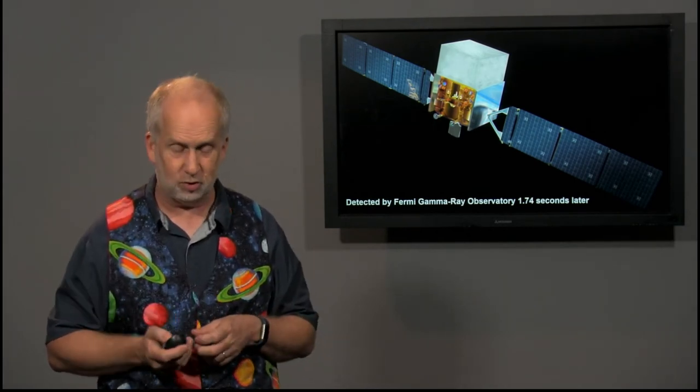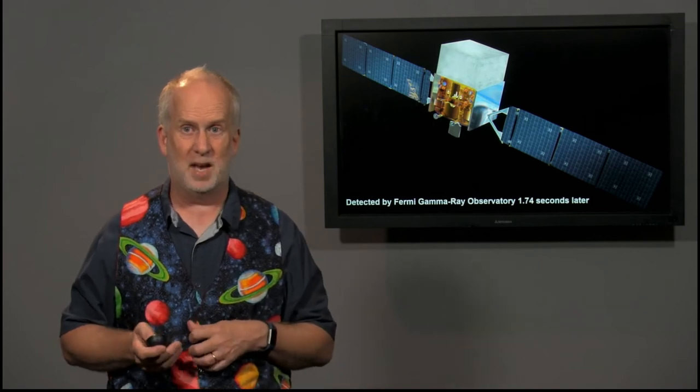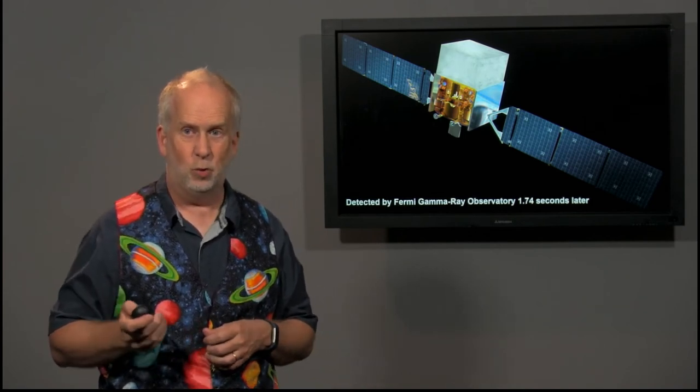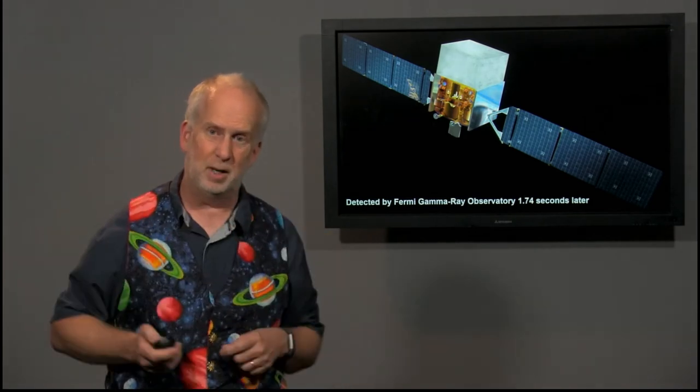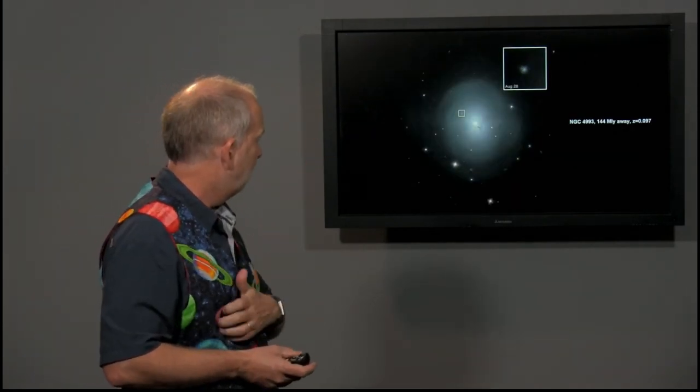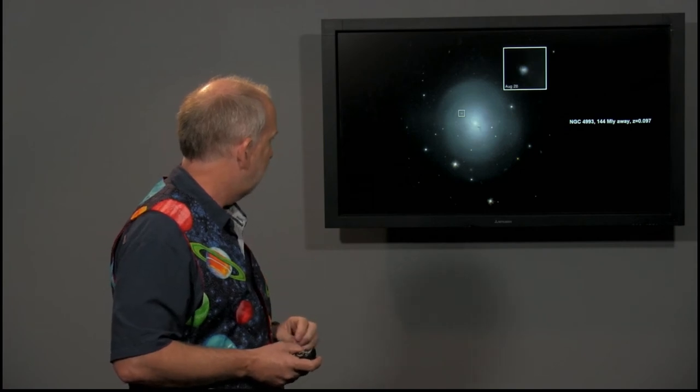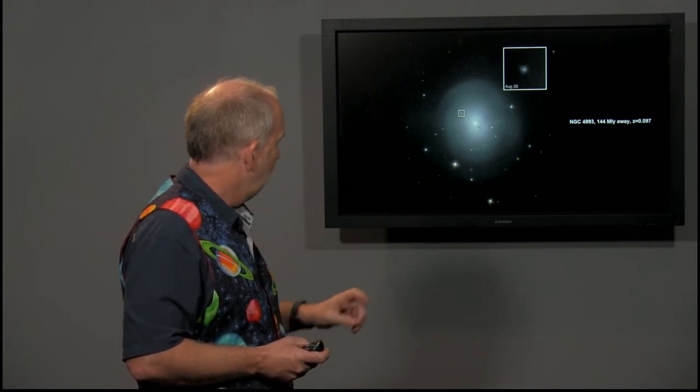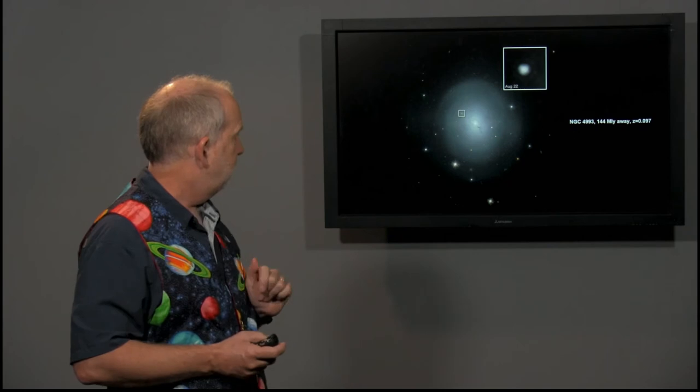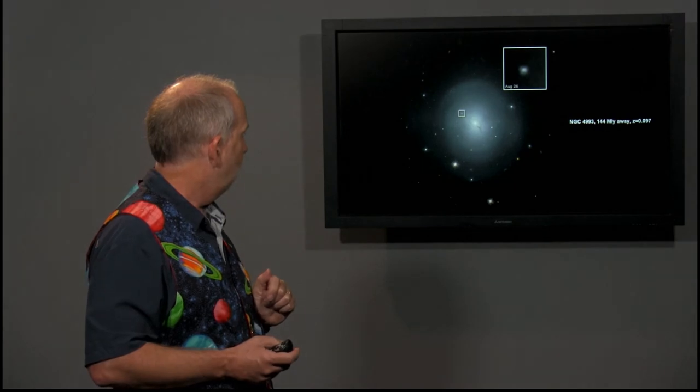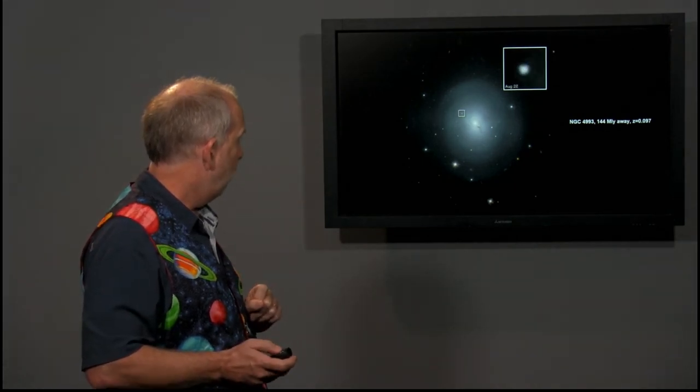They succeeded in spotting an object that was changing in this part of the sky. It's galaxy NGC 4993, which is 144 million light years away, redshift 0.097. There was a dot that faded away.